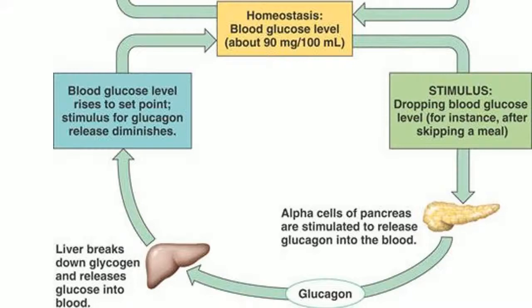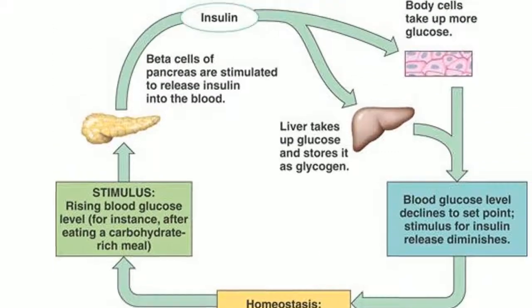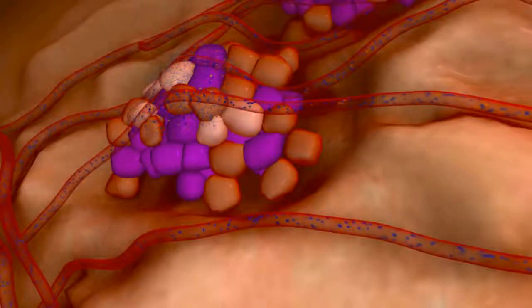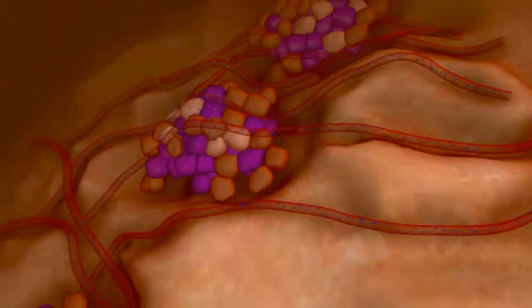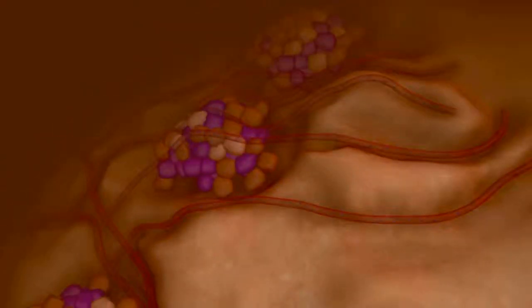If the cells are not consuming as much glucose as is being released by the liver, the glucose level goes high in the blood. This then triggers the beta cells of the pancreas, which release insulin. We now know that excess glucose is stored as glycogen in the liver.